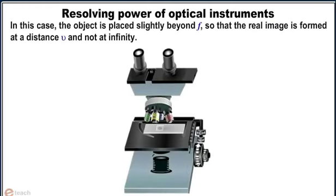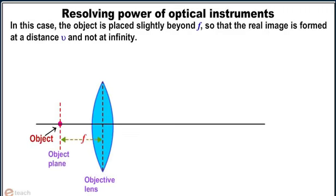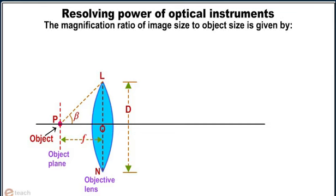In this case, the object is placed slightly beyond f so that the real image is formed at a distance v and not at infinity. The magnification ratio of image size is given by m is approximately equal to v by f.